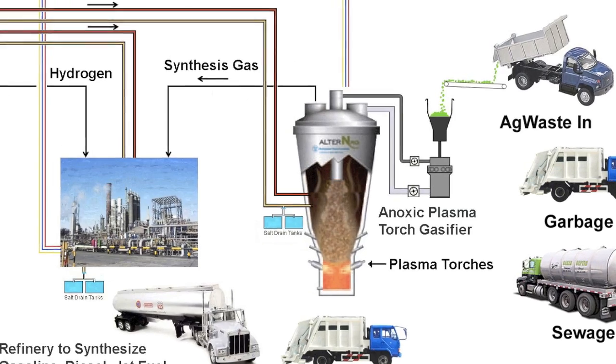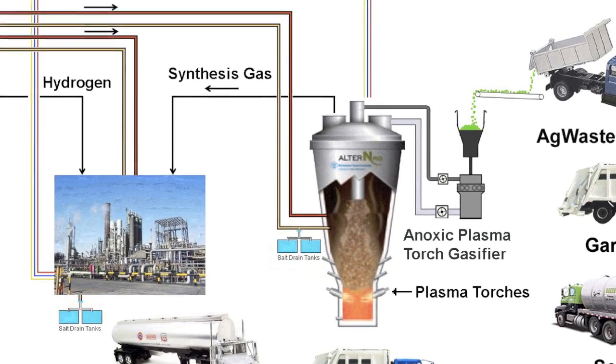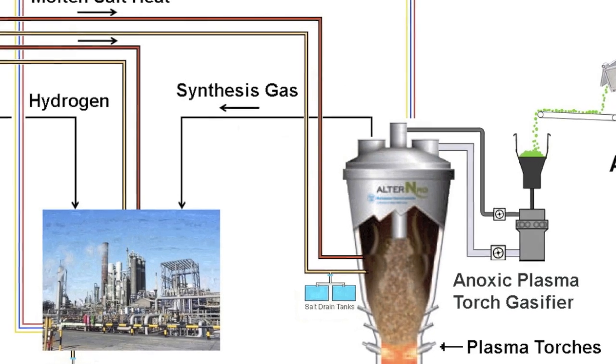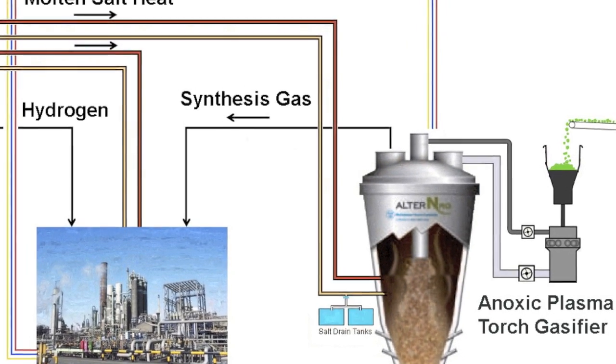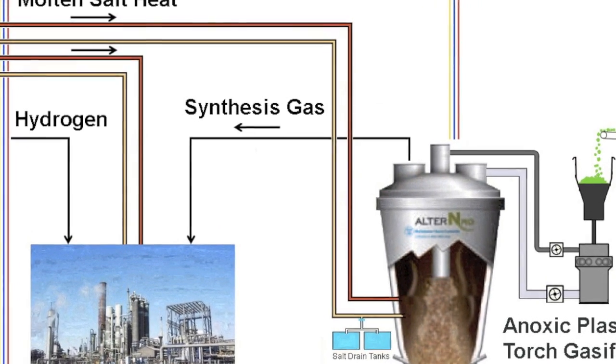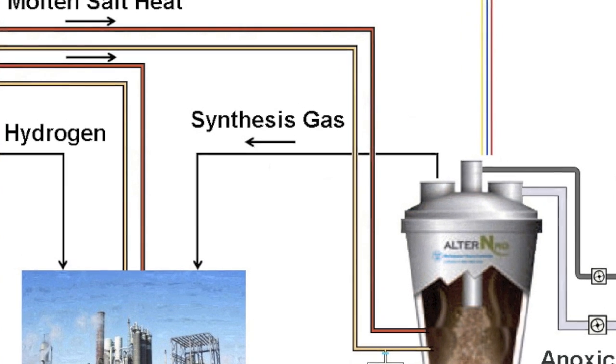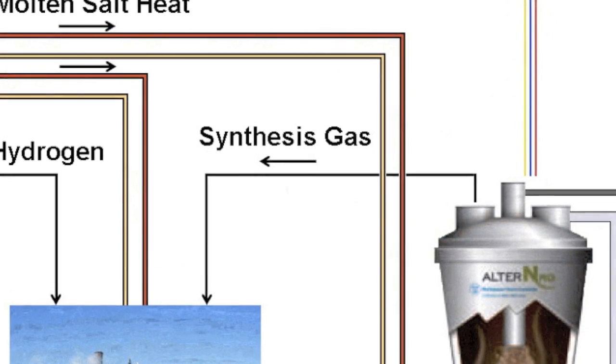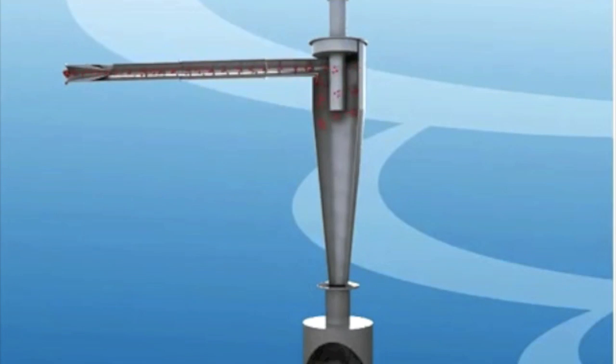Gas leaving the gasification unit usually contains suspended particles, so the next step will be to remove any suspended particles. Different companies use different methods to perform this step, and one particular method would be using a cyclone separator. In this unit, particles are removed by rotational and gravitational effects.